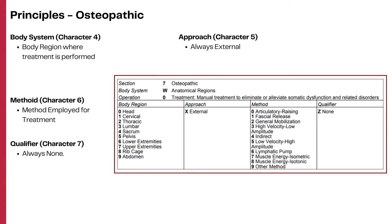The fourth character specifies the body region on which the osteopathic treatment is performed. The fifth character approach for osteopathic treatment is always external. The sixth character specifies the method by which the treatment is accomplished, and the seventh character is not specified in the osteopathic section and always has the value of none.